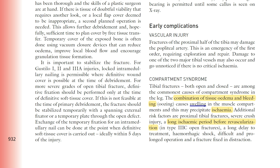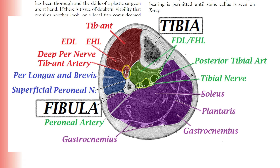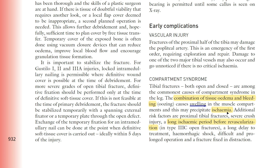In tibial fractures, for both open and closed fractures, these are the commonest causes of compartment syndrome in the leg. The combination of tissue edema and bleeding causes swelling in the muscle compartments, which may precipitate ischemia. Because of its subcutaneous position, the tibia is more commonly fractured, and the compartment surrounding the tibial bone is small in size, so any swelling can strangulate the area causing ischemia.